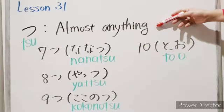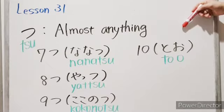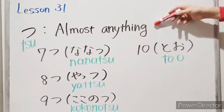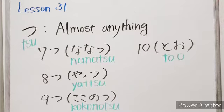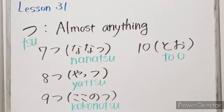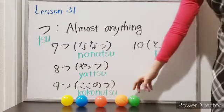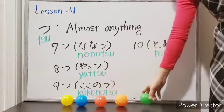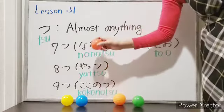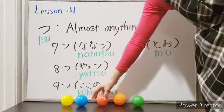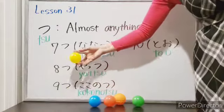Ten is an exception — you need to say too. Actually, after ten, we cannot use tsu. You need to use ko. But as I said, I will teach you that in the future. Let's count some bowls together. Hitotsu. Futatsu. Mittsu. Yottsu. Itsutsu.